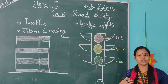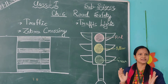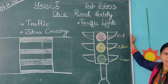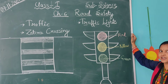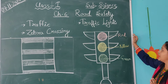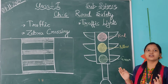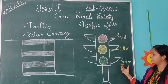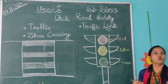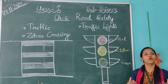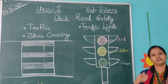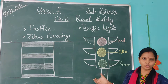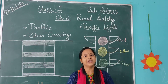When you are at a road crossing, there is a traffic light signal. Red says stop. Yellow says get ready. Green says go. Just follow these traffic rules and be careful.